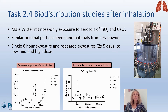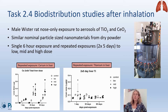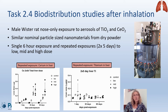For these biodistribution studies, we exposed male Wistar rats to aerosols of titanium dioxide and silicon dioxide nanomaterials — you can see the aerosol exposure setup on the right. The materials had a similar nominal particle size from dry powder and a comparable aerodynamic diameter when dispersed in air. We exposed rats for six hours in a single exposure or repeated exposure of two times five days across three dose levels — low, mid, and high — by varying the time of exposure. Below you see an example of repeated exposure to silicon dioxide: the silicon content in the liver was measured one day, 30 days, or 60 days post exposure, showing a time-dependent and dose-dependent increase.